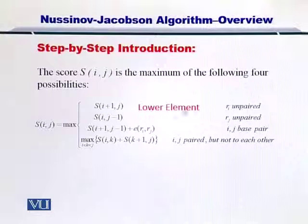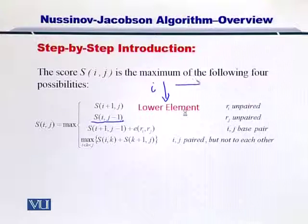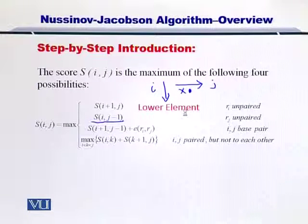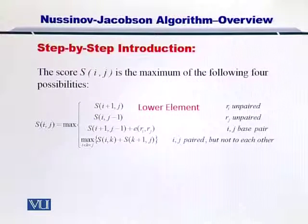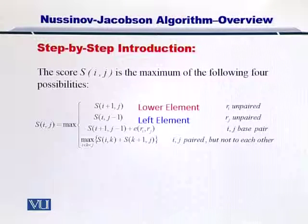The next one is S i j minus one. If you are located at j, j minus one would put you on the left side. So this means you are looking at the element that is to your left.